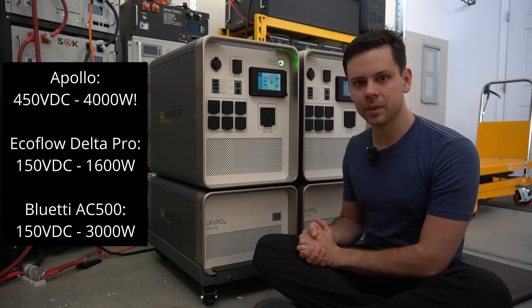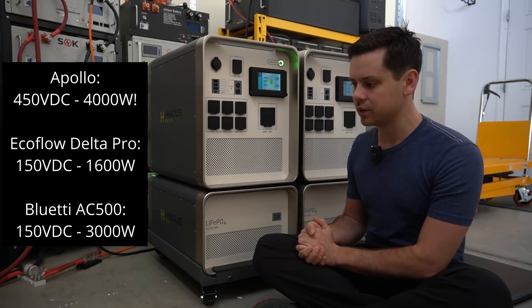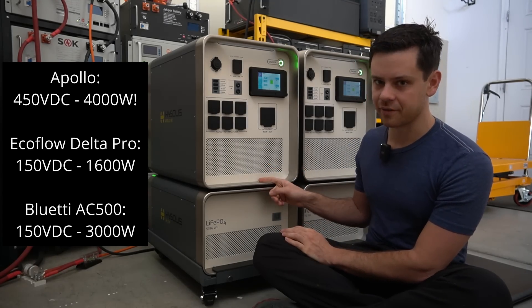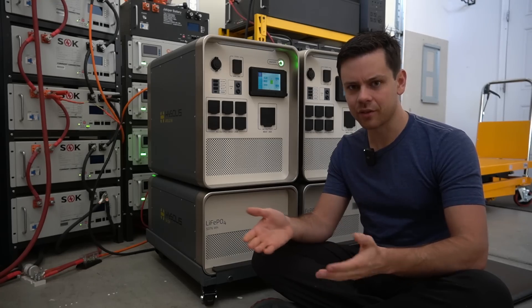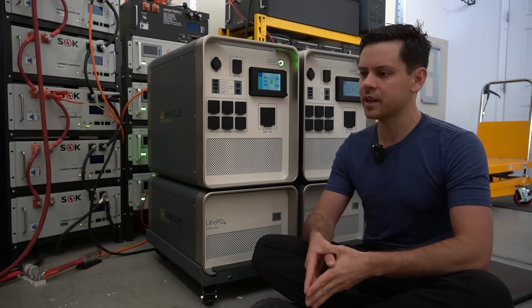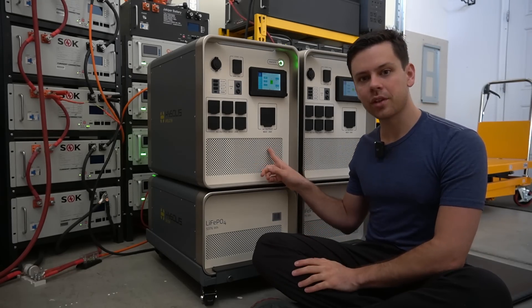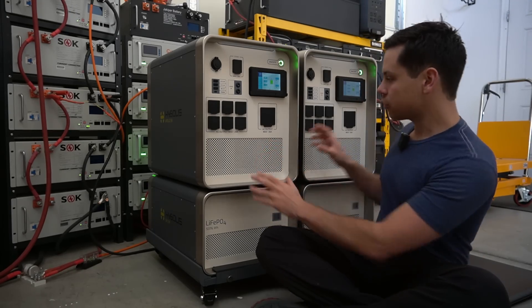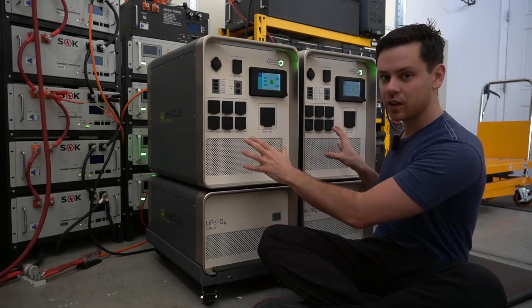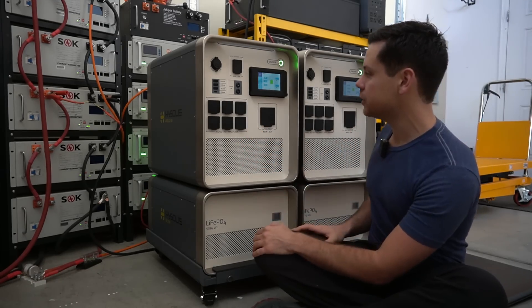Pretty much all the competitors are limited to about 150 volts. This one can do 450 and we've all been requesting for this feature for years now. It's crazy that this is finally the first one that can do it. Also you can connect 4,000 watts of solar to each unit. So right here you can connect 8,000 watts of solar panels to these two units.